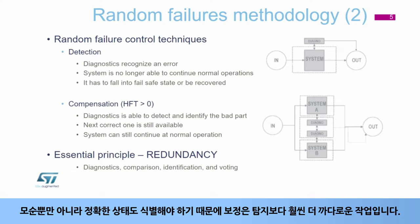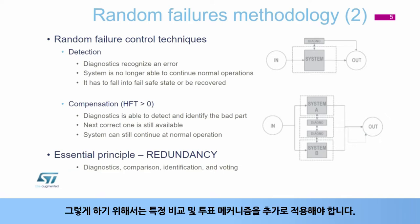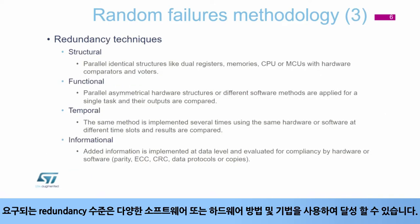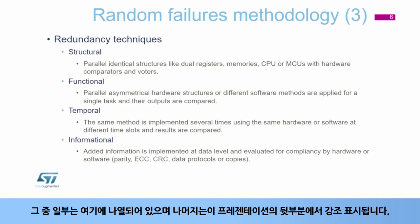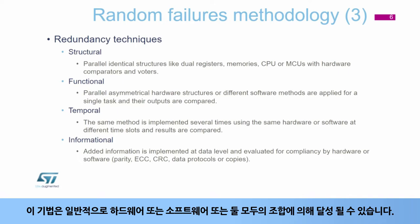Compensation is considerably more demanding than detection, as not only discrepancies but the correct state has to be identified as well. To do so, specific comparison and voting mechanisms have to be additionally applied. The required level of redundancy can be achieved using a wide range of different software or hardware methods and techniques. Some of them are listed here, and others will be highlighted later in this presentation. The techniques can usually be achieved either by hardware or software, or a combination of both.